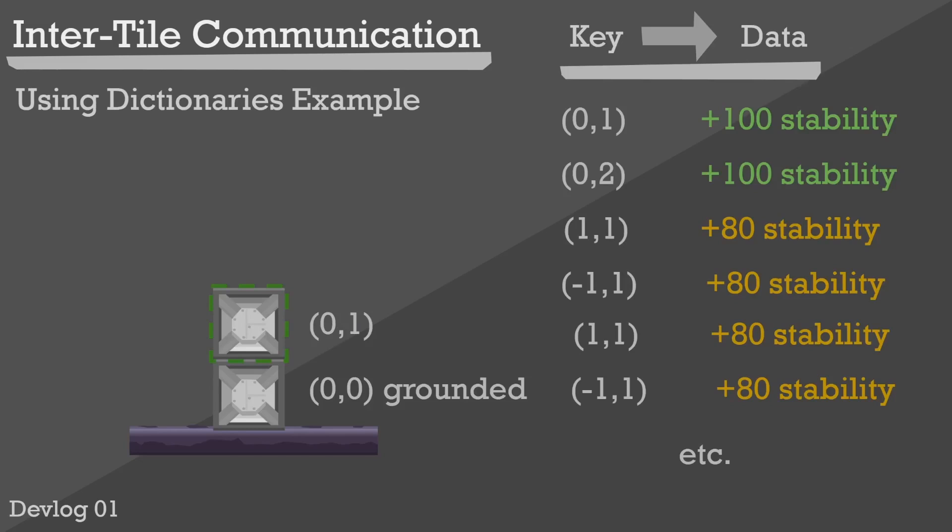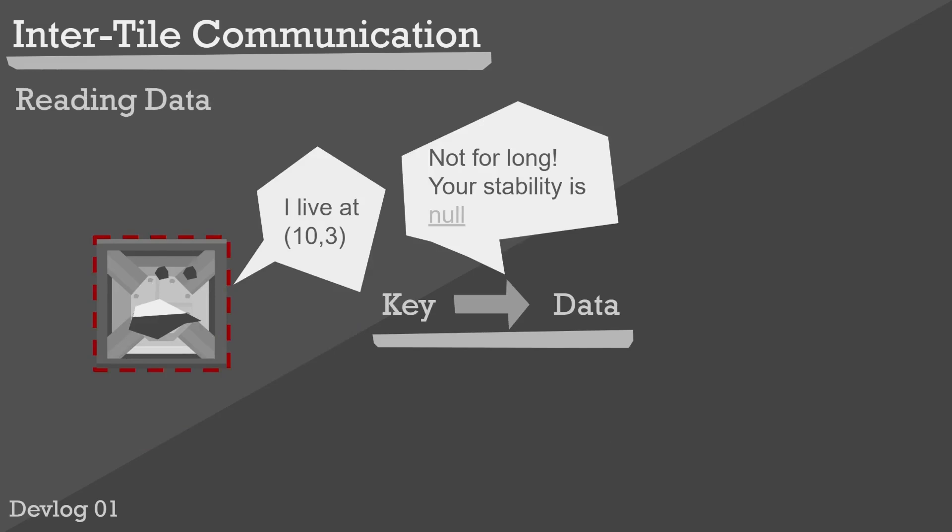What this all means is that there is a stability associated with each position. A tile would access its data by using its position as a key in the dictionary. If the key is simply not there then the tile will read its stability as zero.